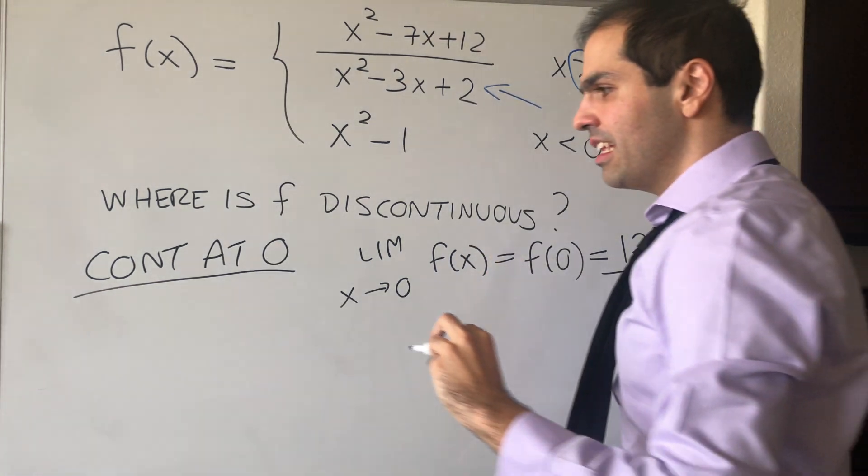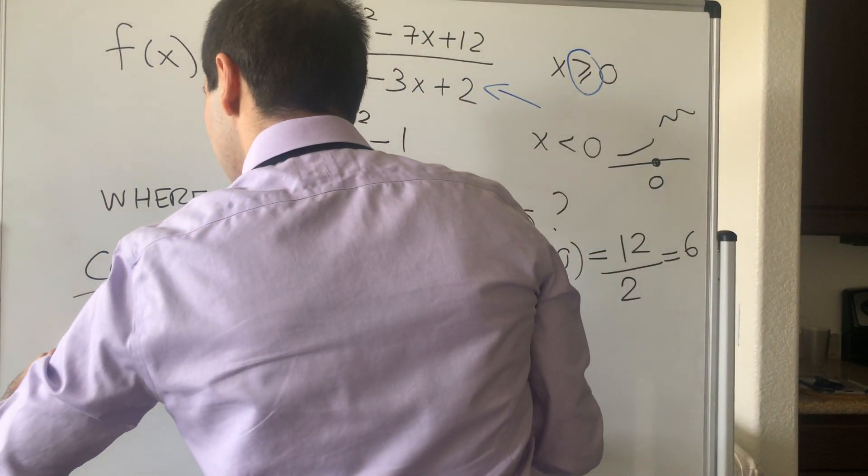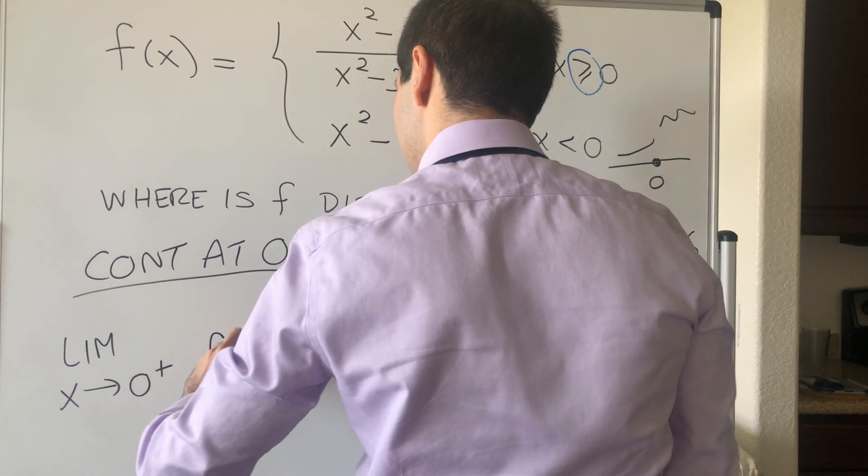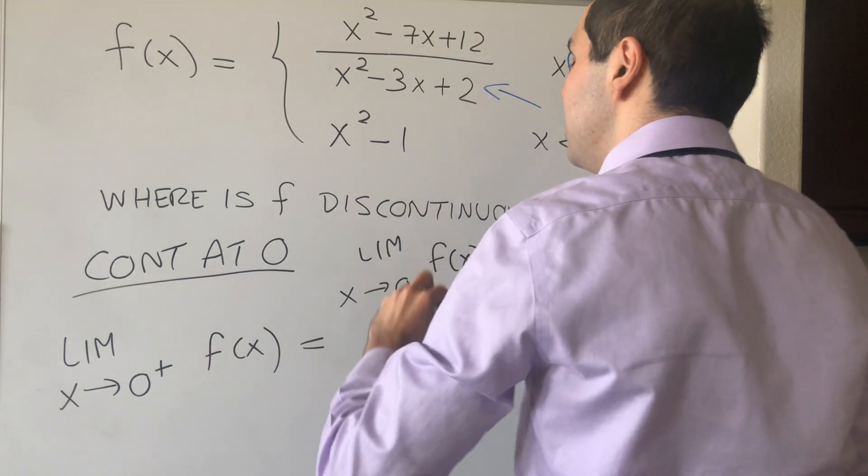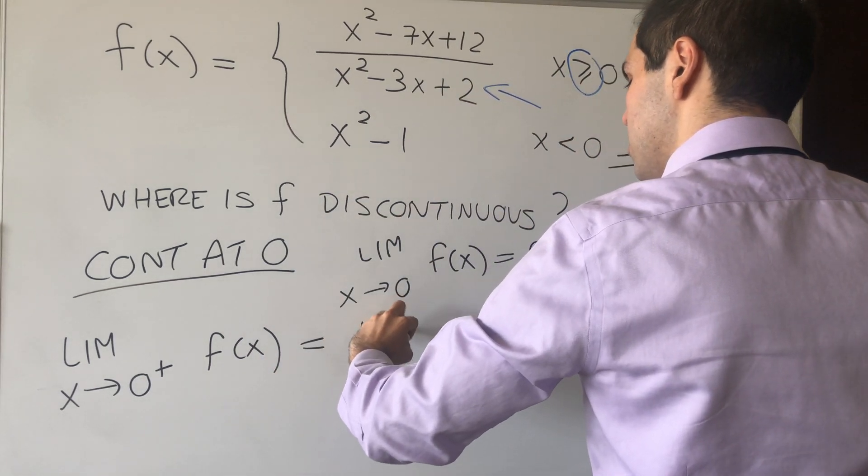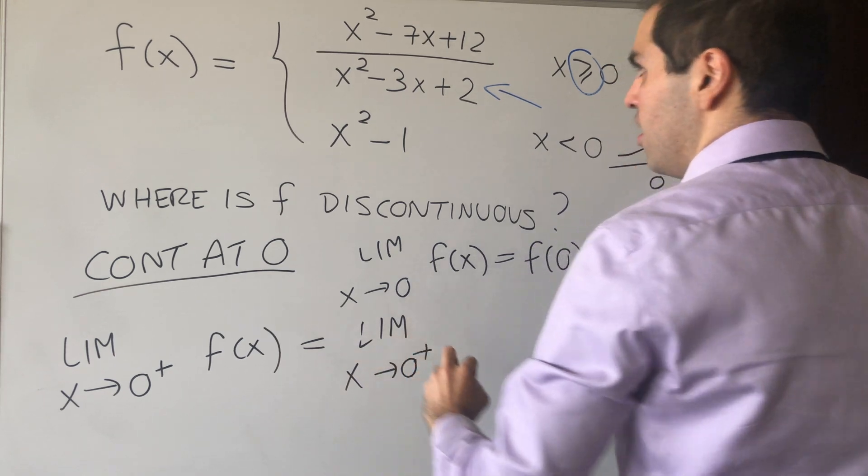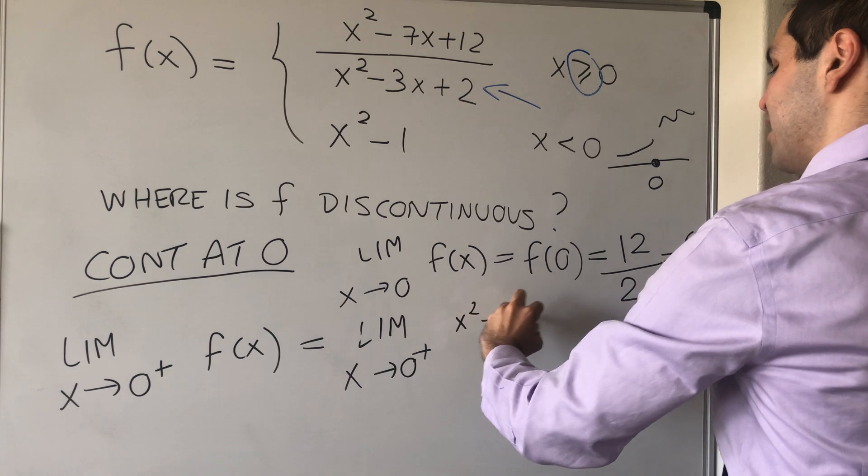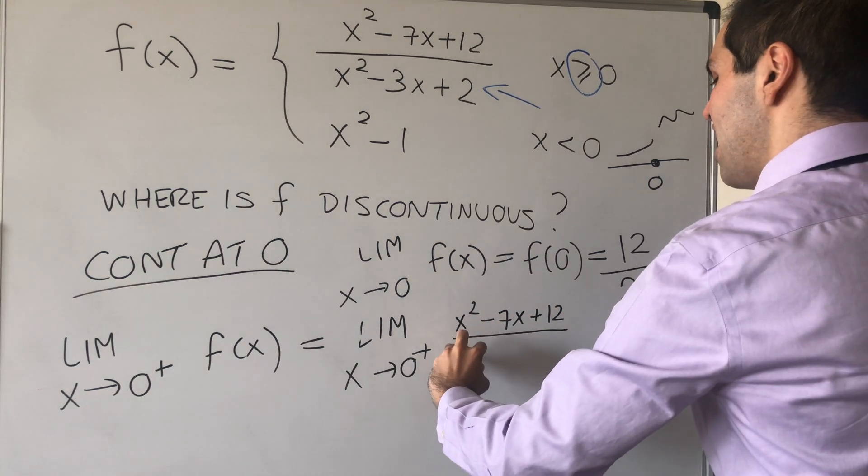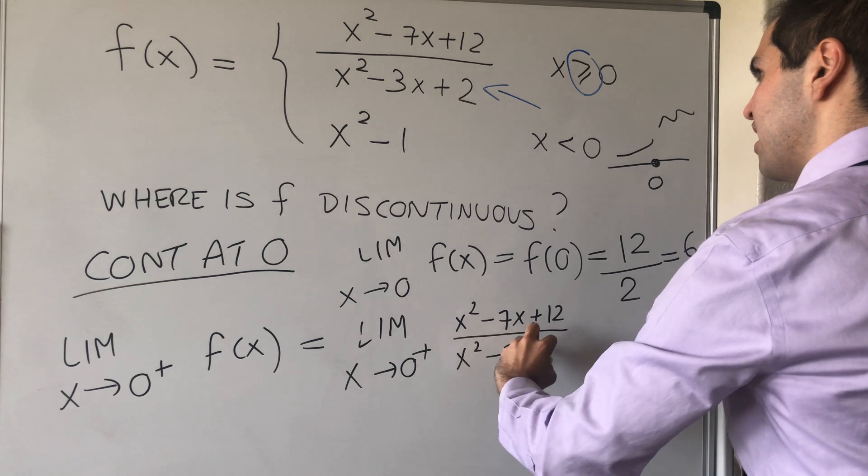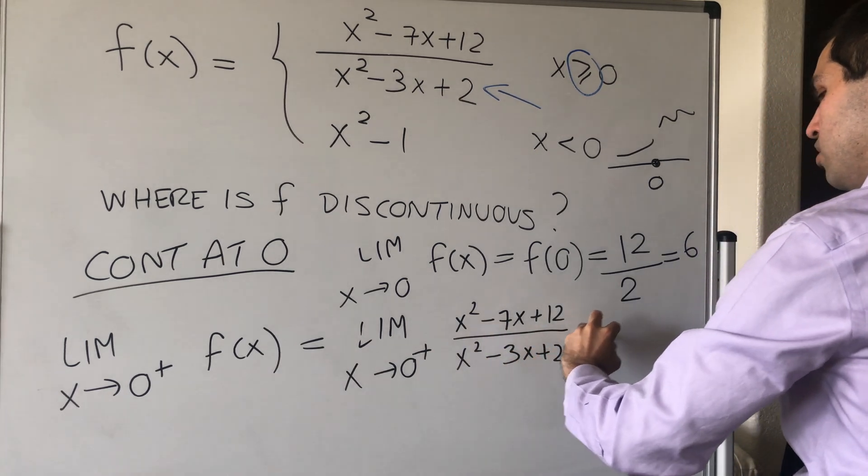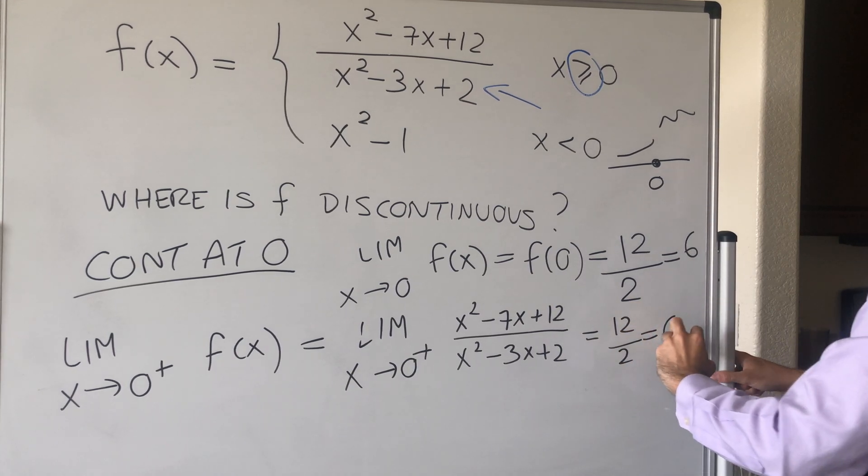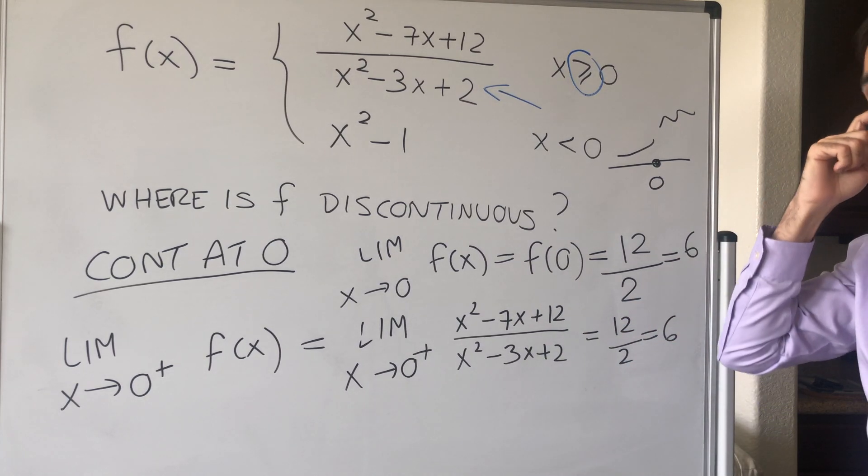So first I will calculate the limit as x goes to 0 plus of f of x. Well, that is the limit as x goes to 0 plus of x squared minus 7x plus 12 over x squared minus 3x plus 2. And again, same thing here, that just becomes 12 over 2, which is 6. So the right-hand side limit is 6.